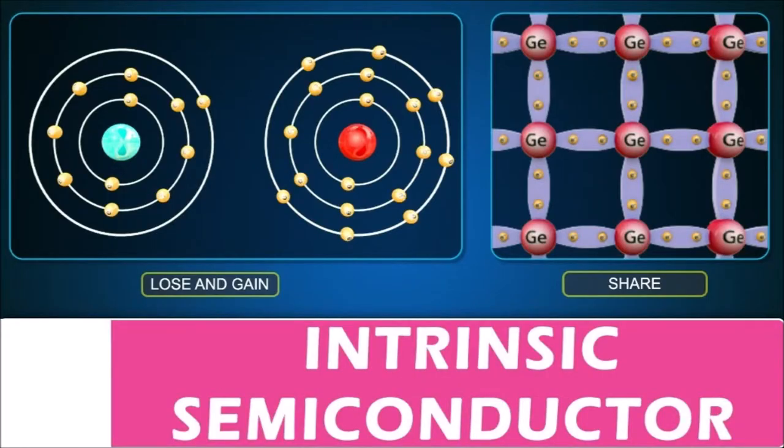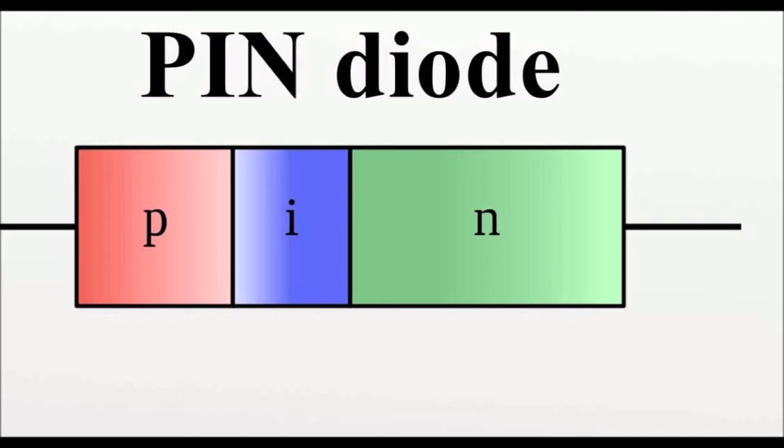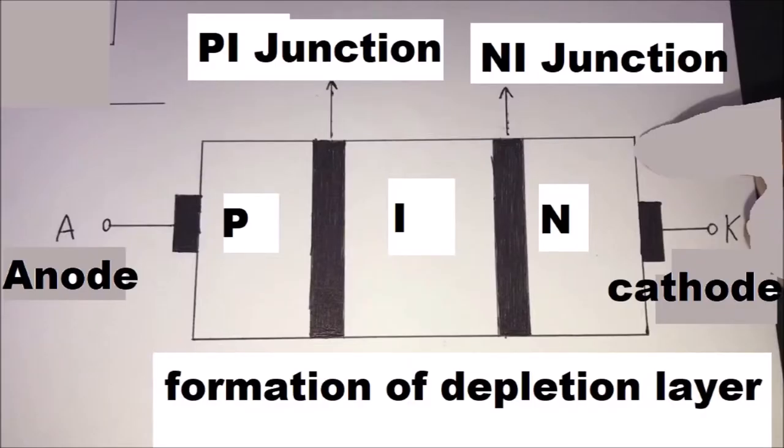Intrinsic semiconductor. An intrinsic, or pure semiconductor, also called an undoped semiconductor or I-type semiconductor, is a pure semiconductor without any significant dopant species present. The number of charge carriers is therefore determined by the properties of the material instead of the amount of impurities. PIN diode. A PIN diode is a diode with a wide, undoped intrinsic semiconductor region between a P-type semiconductor and an N-type semiconductor region. The P-type and N-type regions are typically heavily doped because they are used for ohmic contacts.